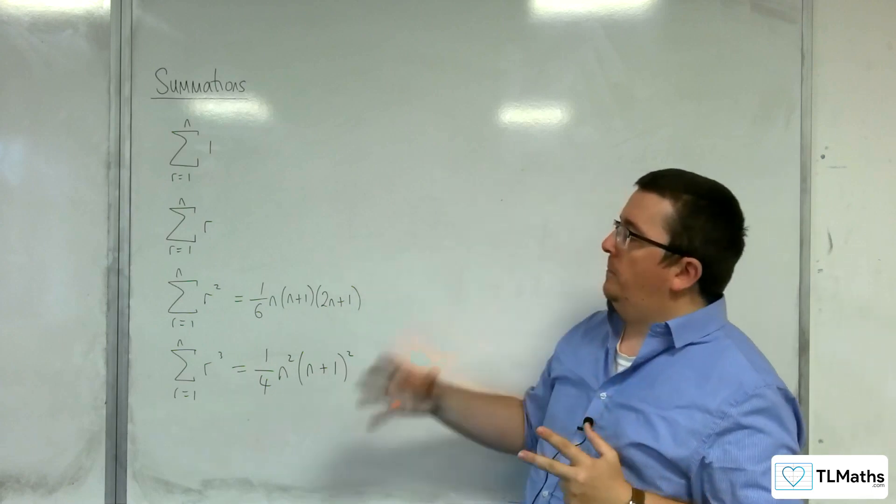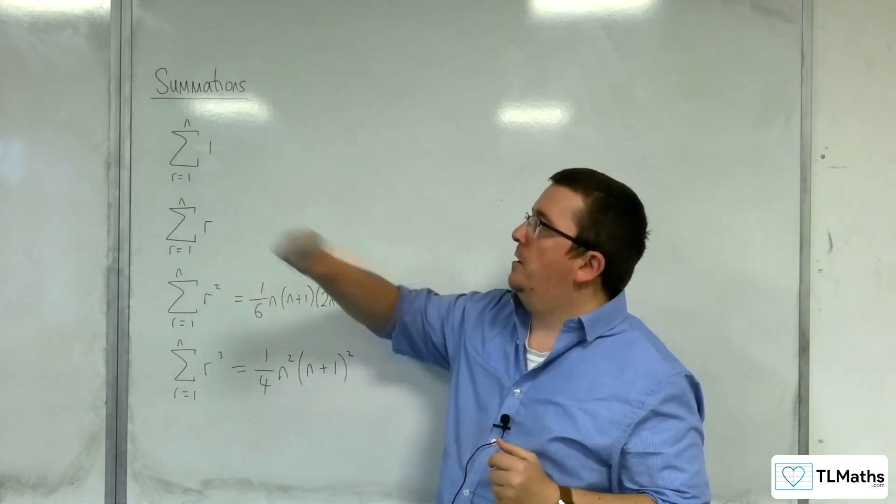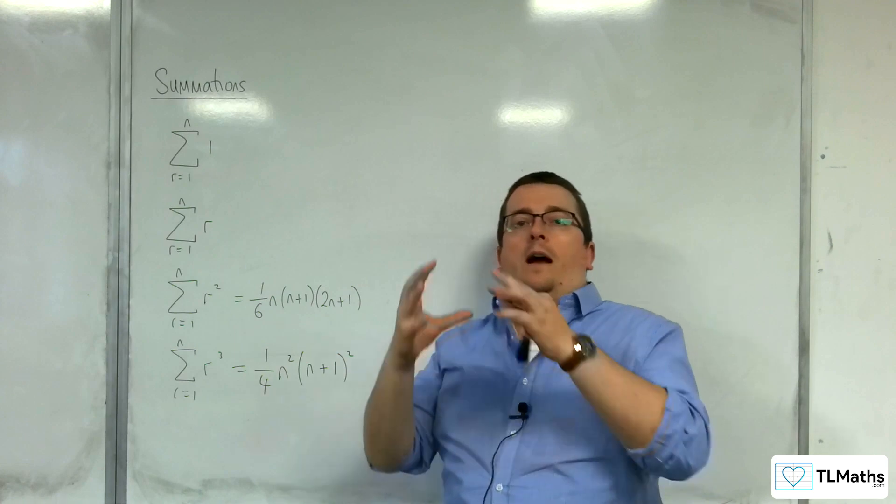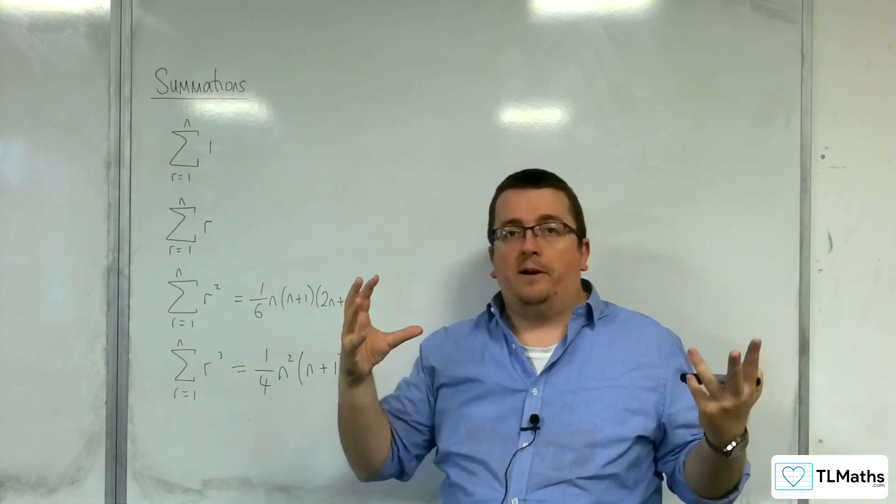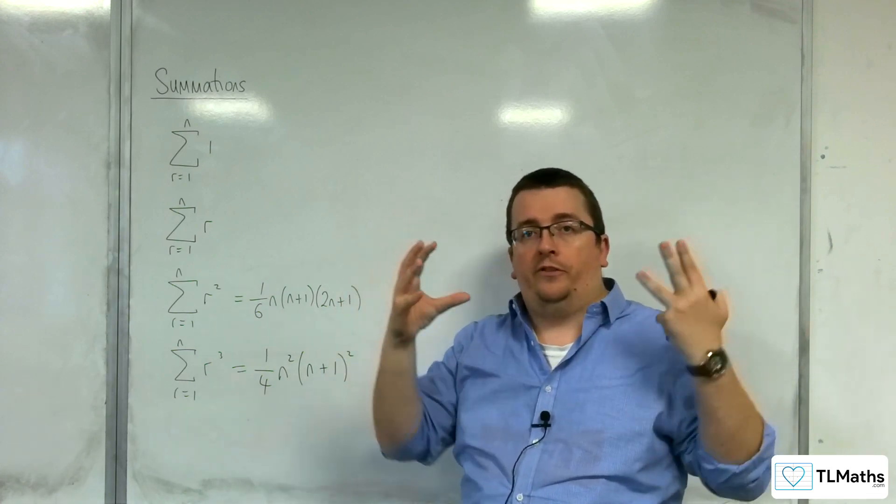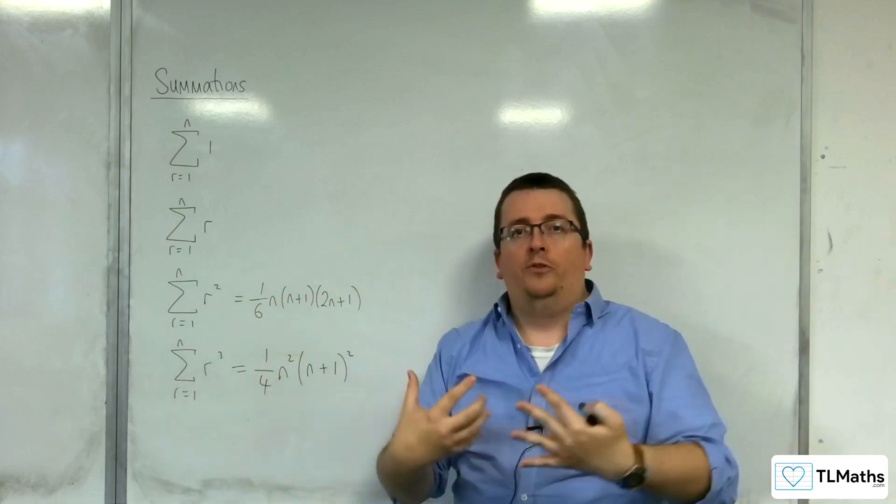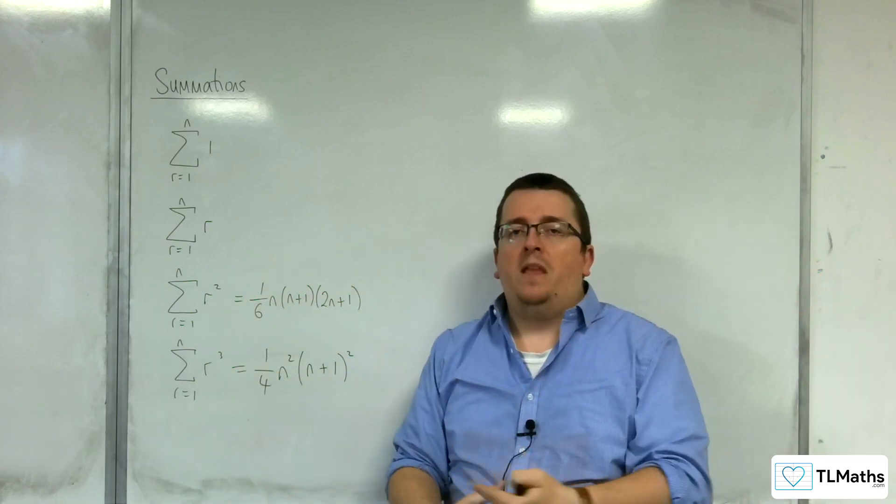You're going to get some kind of summation. It might be something like 4r squared plus 2r plus 3, for example, which we're then going to be able to break apart into separate summations and then we're going to bring them all together factorizing. That's the idea.